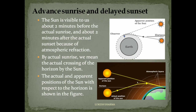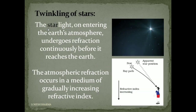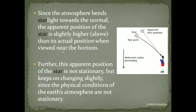What is the reason for advanced sunrise and delayed sunset? The sun is visible to us about 2 minutes before the actual sunrise and about 2 minutes after the actual sunset because of atmospheric refraction. By actual sunrise we mean the actual crossing of the sun over the horizon. The apparent position of the sun is slightly higher than its actual position — just as with stars, atmospheric refraction bends the light, making the sun appear above its actual position before it has actually risen.